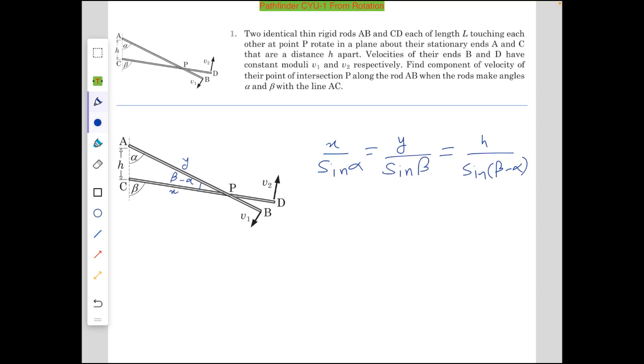From here, what we can notice is that the velocity of point of intersection P along the rod AB is actually decreasing the length of y, so it is derivative of y with respect to time, dy/dt. This is the required speed.